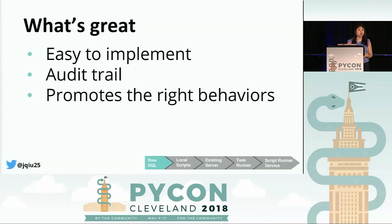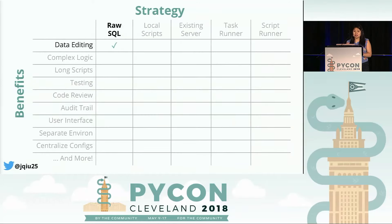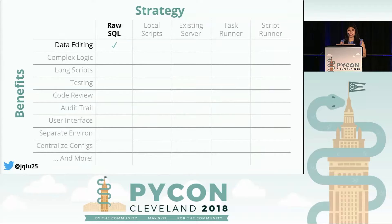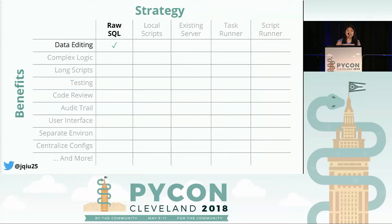This process helps promote the right behaviors — it doesn't just encourage people to be more careful, it also teaches them the right things to do. We've implemented a manual version of a code review process and an audit trail. At your average startup, raw SQL edits are probably not going to go away — we still use this spreadsheet today at Spring. But this process empowers engineers to avoid making mistakes by making sure they get spot checked.